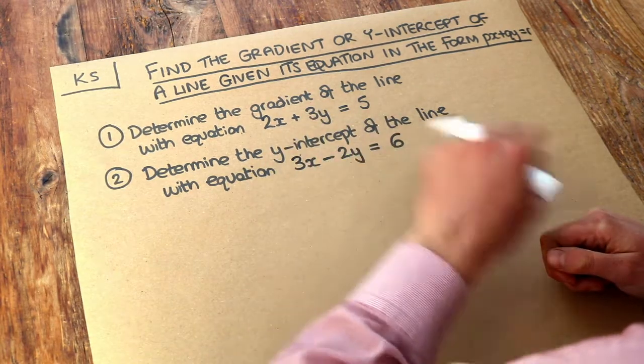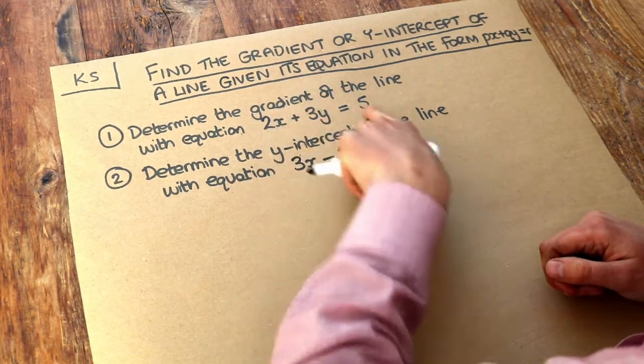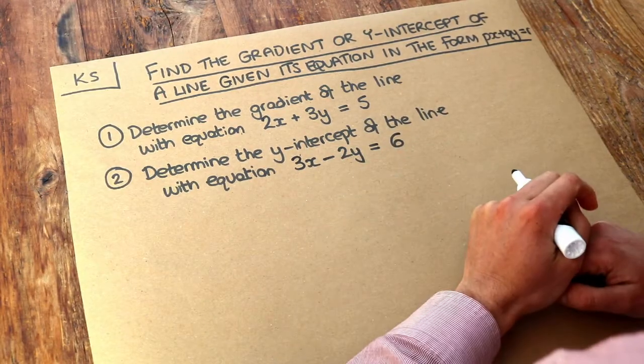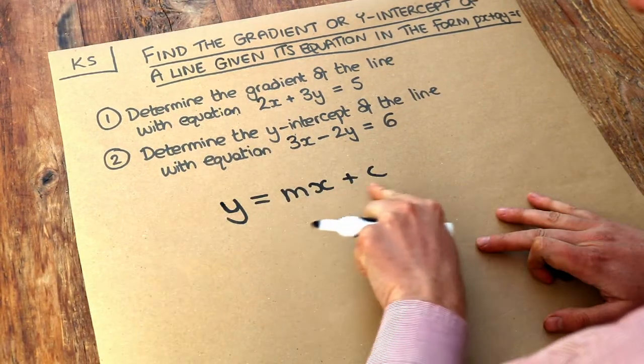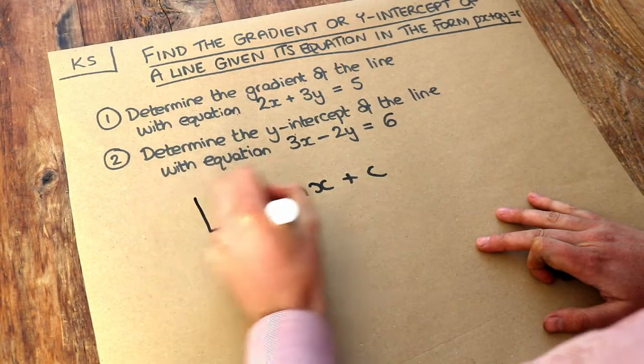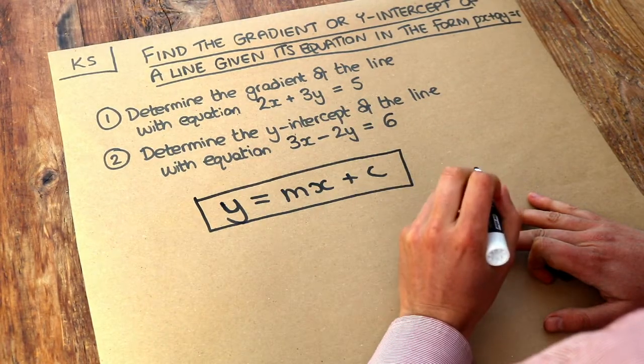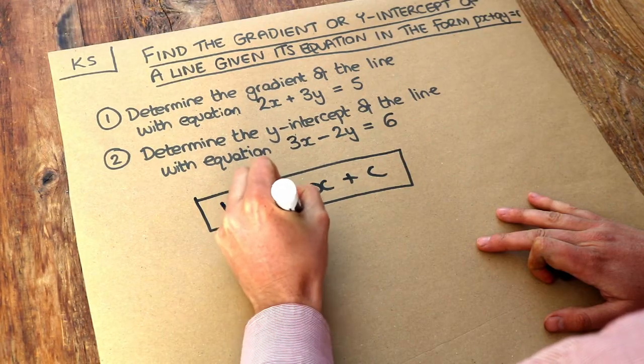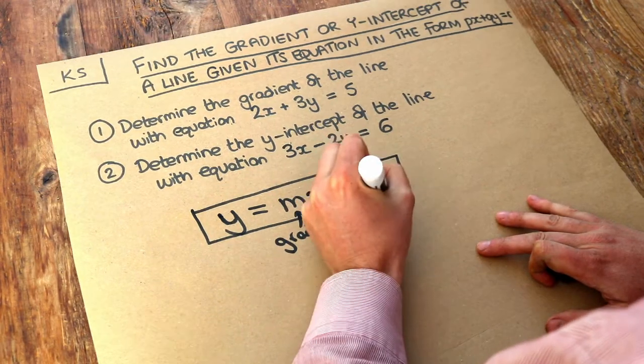We've got these two equations here. We want to find the gradient of the line with this equation and the y-intercept of the line with this equation. The key form of the equation of a straight line is y equals mx plus c, where m is the gradient and c is the y-intercept.